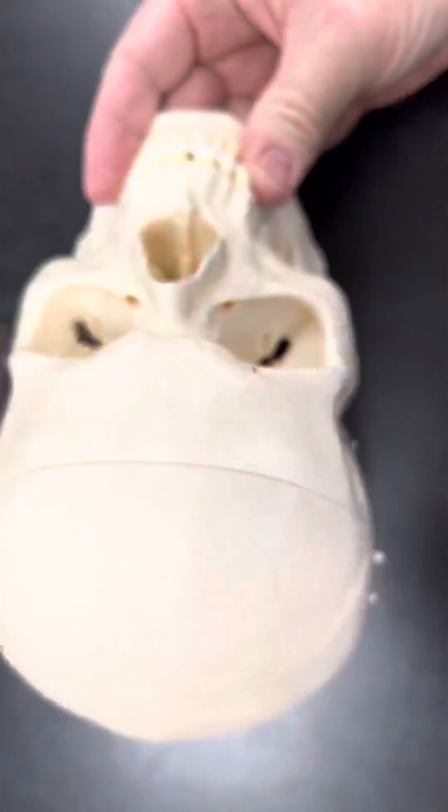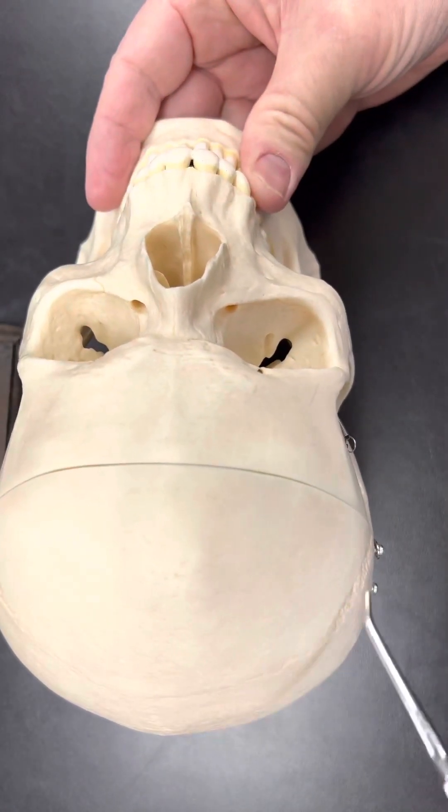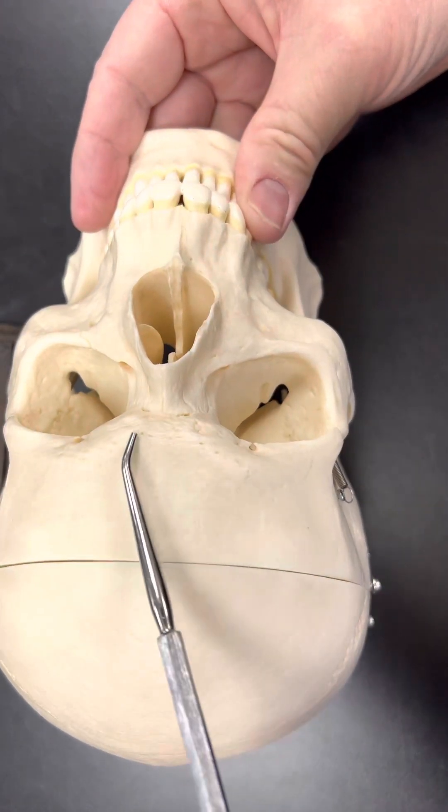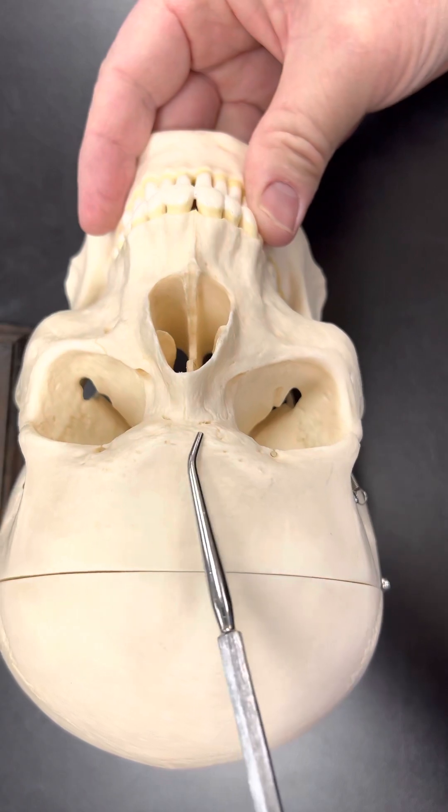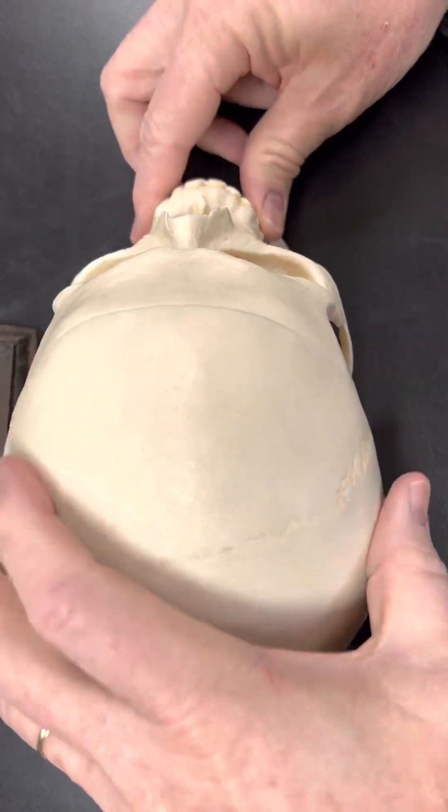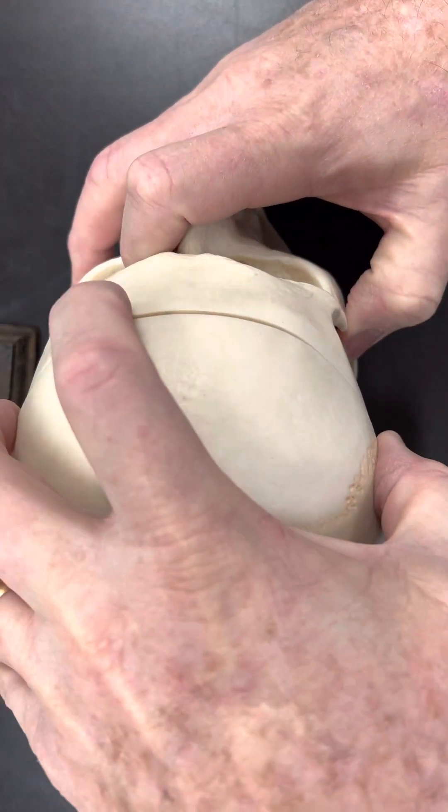And then the front here is going to be the frontal bone. So this all is going to be the frontal bone. This right here is what we call the glabella. I'm going to take the top of the skull off.